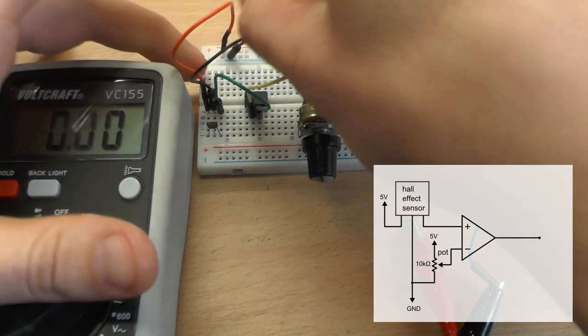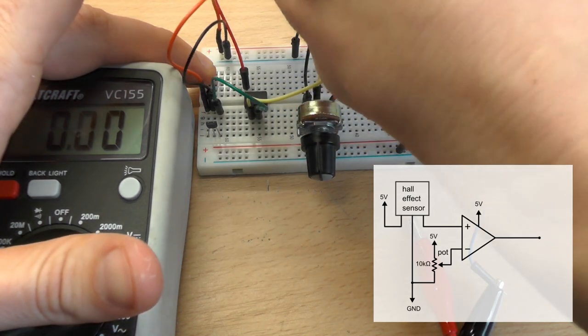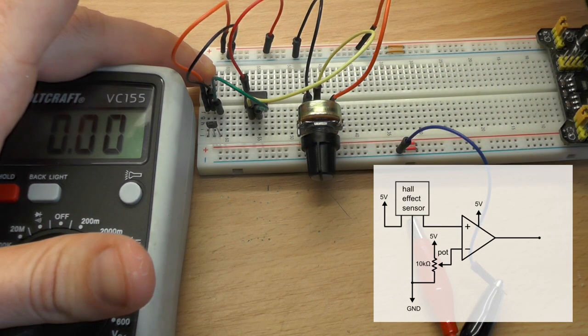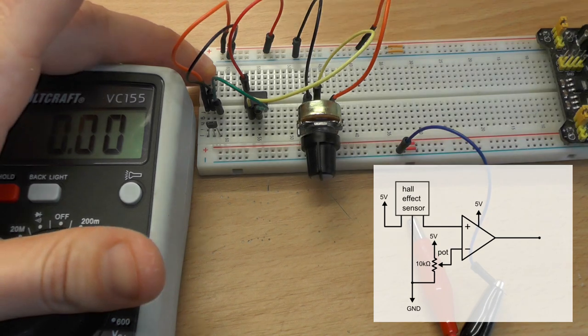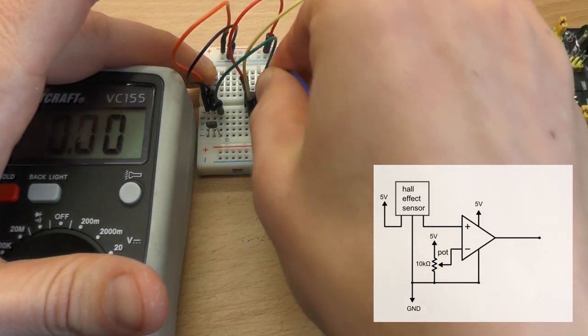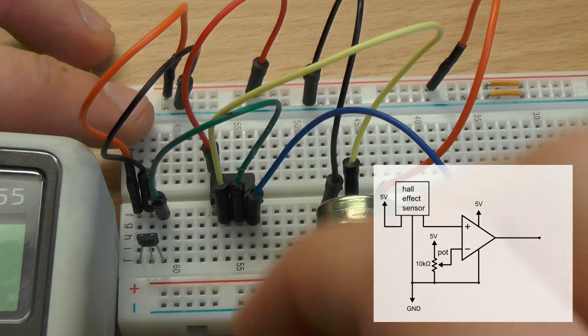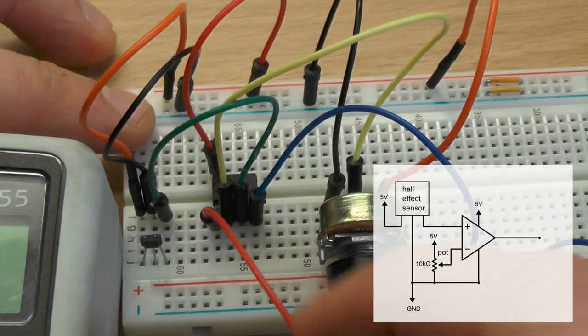and then we need also the supply voltage for the amplifier and also ground, and we don't set up any feedback from the output to the inputs.